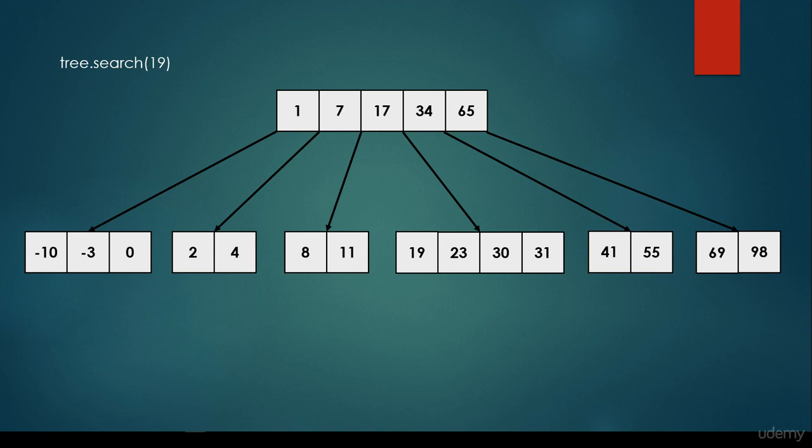We start at the beginning, the first item of the root node. Is it 19? No. 19 is greater than 1 so we have to consider the next item. 19 is greater than 7 so we keep going. 19 is greater than 17 but it is smaller than 34, so we have to take this branch between the two nodes.